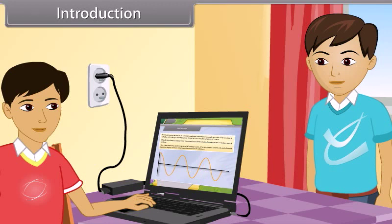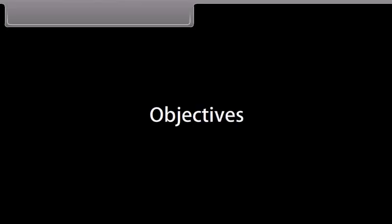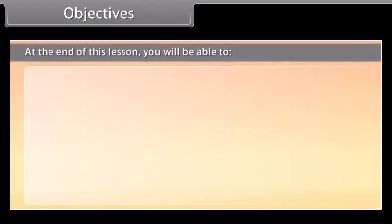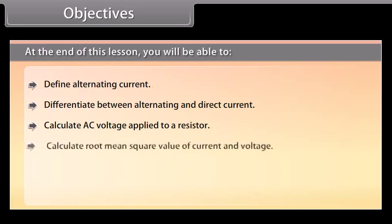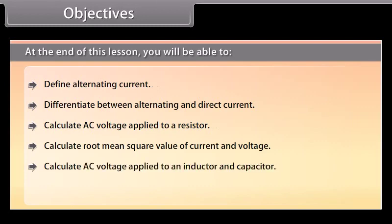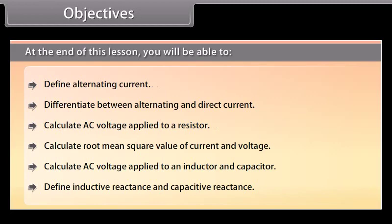Children, today we will study about the alternating current. At the end of this lesson, you will be able to: define alternating current; differentiate between alternating and direct current; calculate AC voltage applied to a resistor; calculate root mean square value of current and voltage; calculate AC voltage applied to an inductor and capacitor; define inductive reactance and capacitative reactance.